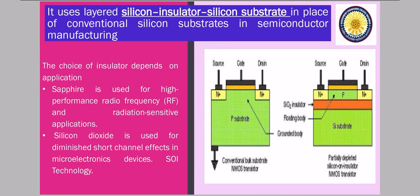Silicon on Insulator technology uses a layered silicon-insulator-silicon substrate in place of conventional silicon substrate in semiconductor manufacturing. As you can see in the diagram, I have compared the conventional bulk substrate, which basically consists of your substrate with source and drain regions, whereas in the Silicon on Insulator technology, as you can see on the right side, it is a partially depleted SOI NMOS transistor. The orange color is the SiO2 insulator between your substrate and the active part of your device.